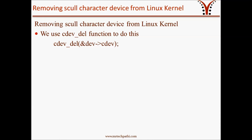Coming to our final topic: removing a skull character device from the Linux kernel. We use cdev_del for this, passing the address of the skull cdev structure that was used while calling cdev_add. Hope the four discussed topics are clear to you. Thanks for watching this tutorial.